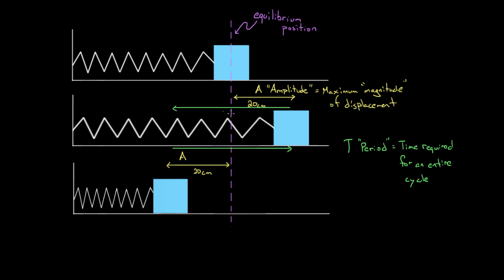So this process is repeating itself. There's not something new happening — it's just the same process over and over. The time it takes to go through one entire cycle, i.e. the time it takes to reset — once this entire system resets to the same position — that's the period.